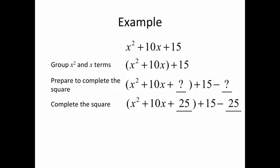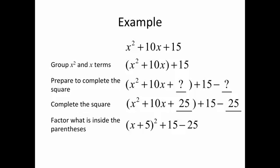It's okay that we take away more than we have because algebraically, negatives are okay. We factor what's inside the parentheses — that's a perfect square — x plus 5 squared. Then we simplify what's outside to get x plus 5 squared minus 10. And that's our goal.